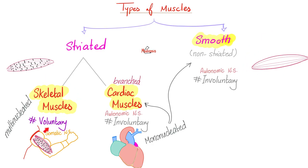Skeletal muscles are voluntary, supplied by the somatic nervous system, and each muscle cell contains many nuclei — i.e., multinucleated. Cardiac muscle is involuntary, supplied by the autonomic nervous system. The fibers are branched, and each muscle fiber has one nucleus only — mononucleated. Smooth muscles are non-striated, autonomic, involuntary, and mononucleated.